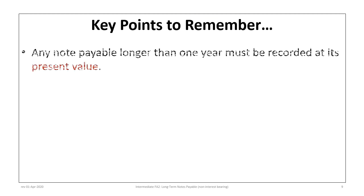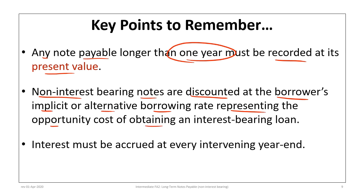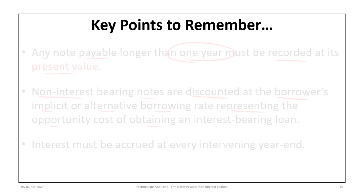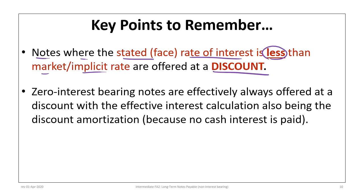Key points to remember: any note payable longer than one year must be recorded at its present value. Non-interest bearing notes are still discounted at the borrower's implicit or alternative borrowing rate, representing the opportunity cost of obtaining an interest-bearing loan. When the stated interest rate is less than the market or implicit rate, the note is offered at a discount; conversely, if the stated rate exceeds the implicit rate, the note is at a premium. Zero-interest notes are always effectively offered at a discount, and the effective interest calculation equals the full discount amortization since no cash interest is paid.